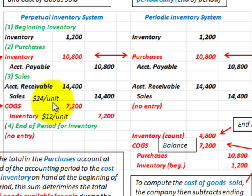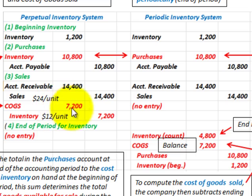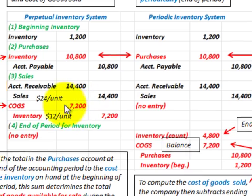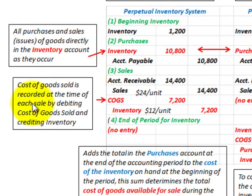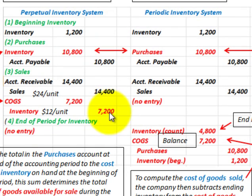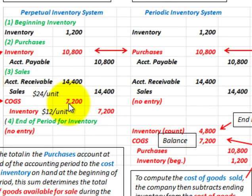The key difference is in how we record cost of goods sold. With the perpetual inventory system, we calculate and record cost of goods sold continuously. With the periodic inventory system, there's no entry at the time of sale — cost of goods sold is calculated at the end of the period. In the perpetual system, cost of goods sold is recorded at the time of each sale by debiting cost of goods sold and crediting inventory. Here, inventory cost was $12 per unit, and 600 units were sold, giving us $7,200 debited to cost of goods sold.